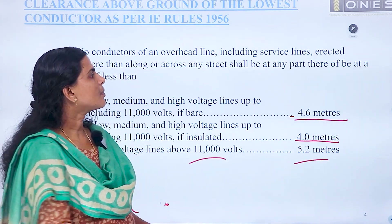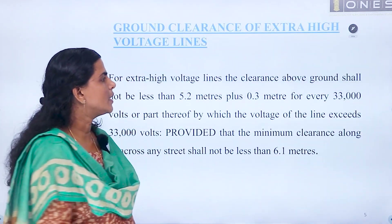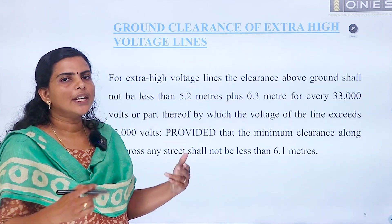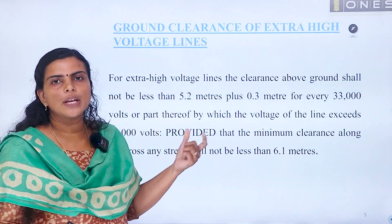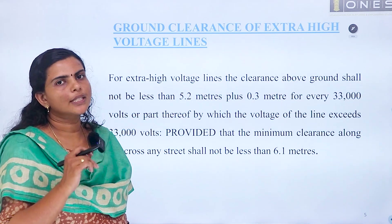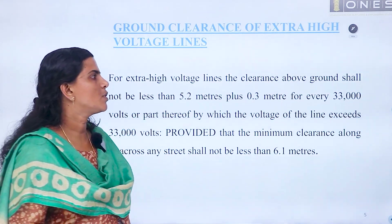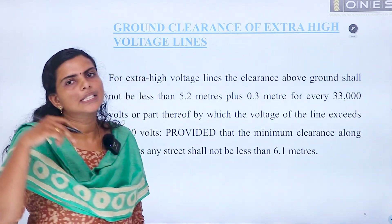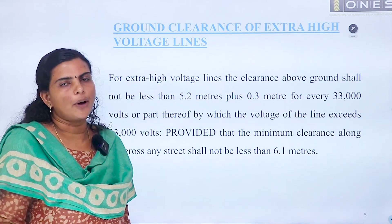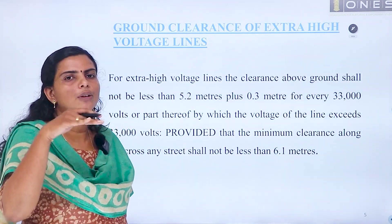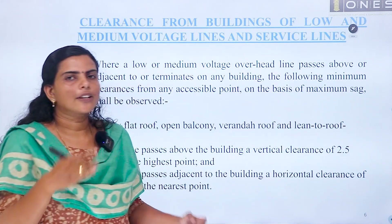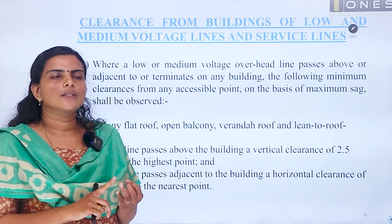For extra high voltages, for every 33 kV addition, 0.3 meters is added to the clearance. The base is 5.2 meters, so for 66 kV it is 5.2 plus 0.3 equals 5.5 meters. Those are the conditions for across the street and along the street.